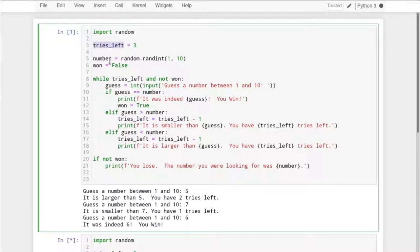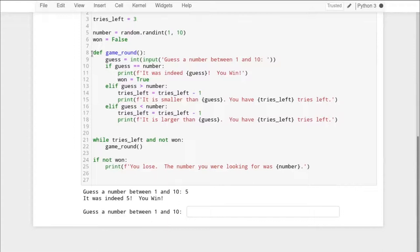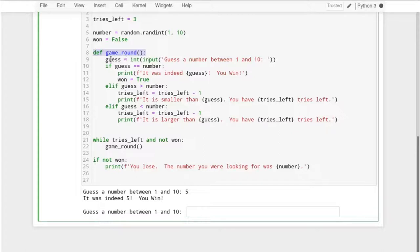We say that has global scope because this is the top of the file. So as long as this Python file or this cell here in Jupyter Notebook. But if this was a file, imagine this is a file. As long as this file is executing, tries left is in scope. Okay, when this file exits, tries left goes out of scope, and it's gone. Okay, so in this entire thing, we have one scope, and it's the global scope.